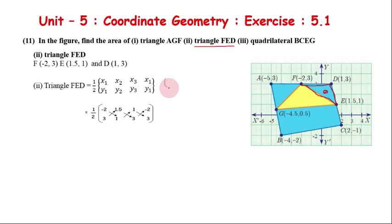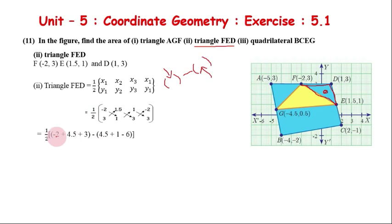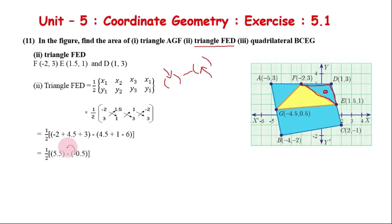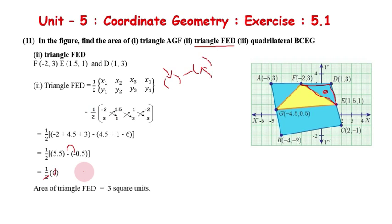Adding in 1/2: first bracket minus, second bracket. First bracket: multiply to get the values; second bracket: multiply to get the values. Result: 1/2 — first bracket: minus 2 plus 4.5 plus 3; minus second bracket: 4.5 plus 1 minus 6. First bracket simplification gives 5.5; second bracket simplification gives minus 0.5. So 1/2 of (5.5 minus of minus 0.5) — minus minus becomes positive: 1/2 of (5.5 plus 0.5) equals 1/2 of 6, giving answer 3 square units. That's the result.